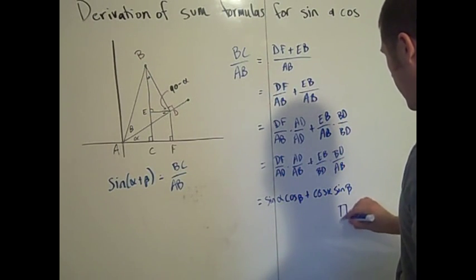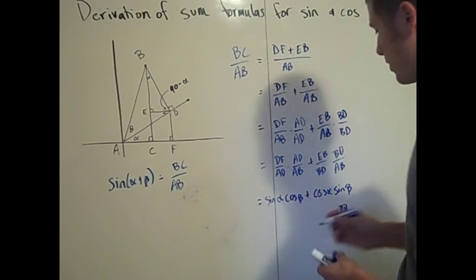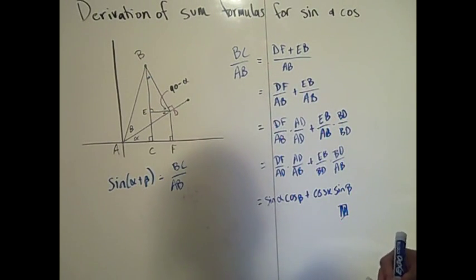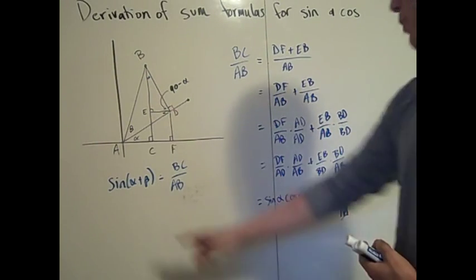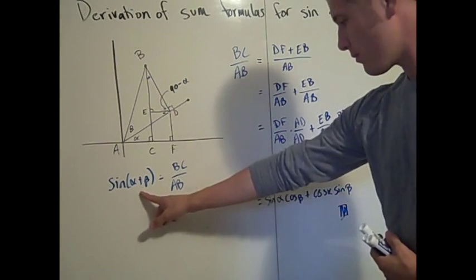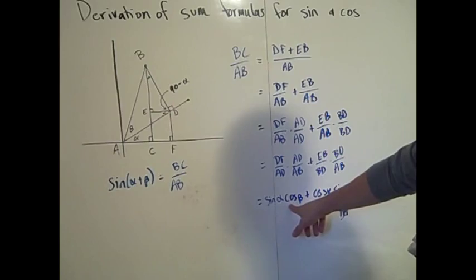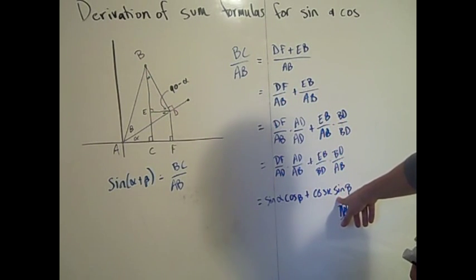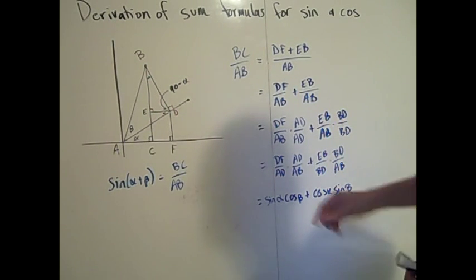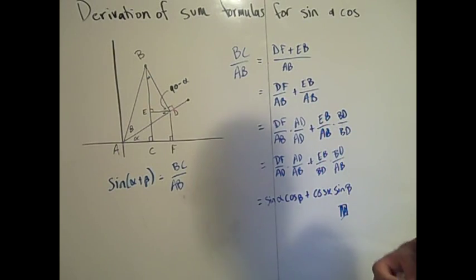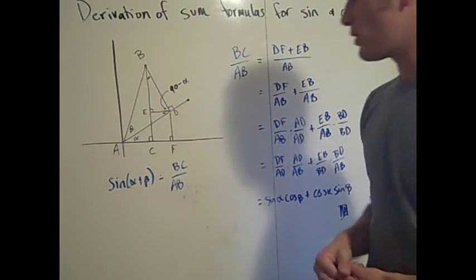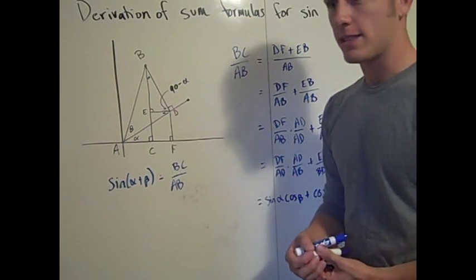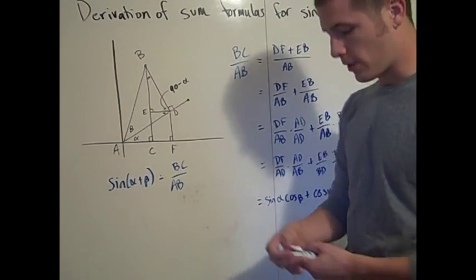And that concludes the proof for the sum formula for sine. So the sine of alpha plus beta is sine alpha cosine beta plus cosine alpha sine beta. We can actually use the same picture to prove the sum formula for cosine.